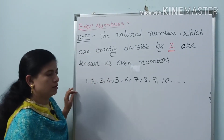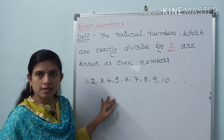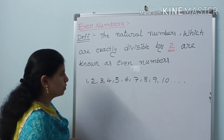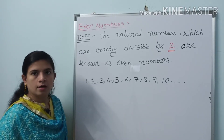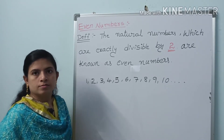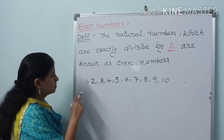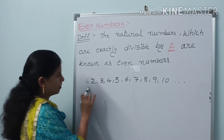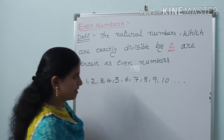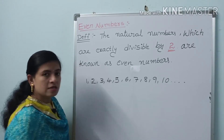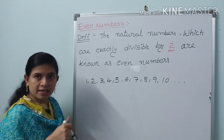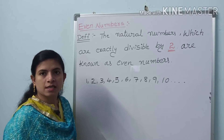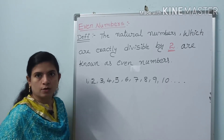Let us define even numbers. The natural numbers which are exactly divisible by two — that means the remainder is 0 — are known as even numbers. Those numbers are called even numbers.